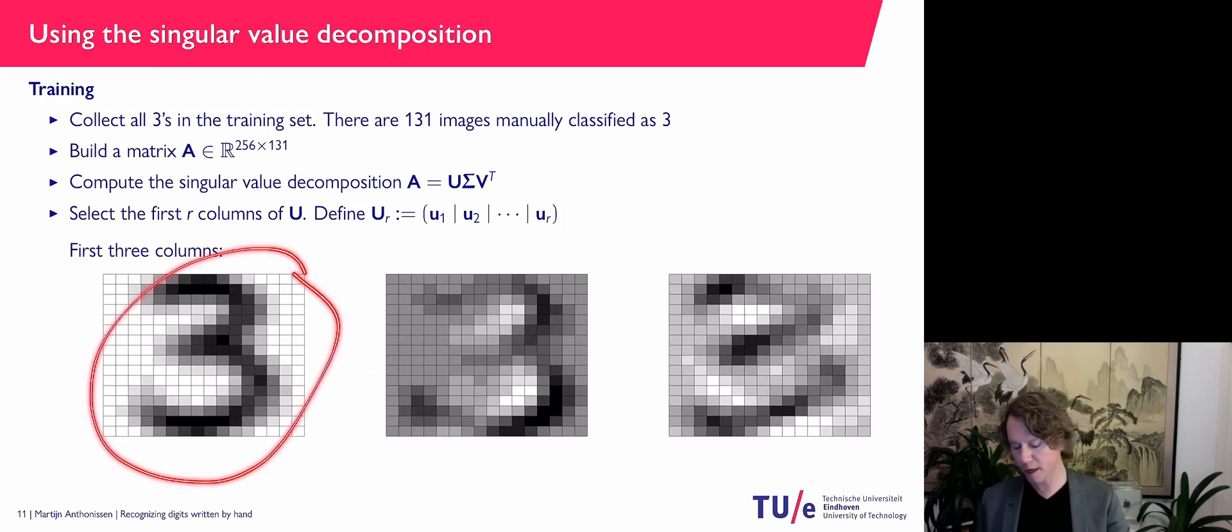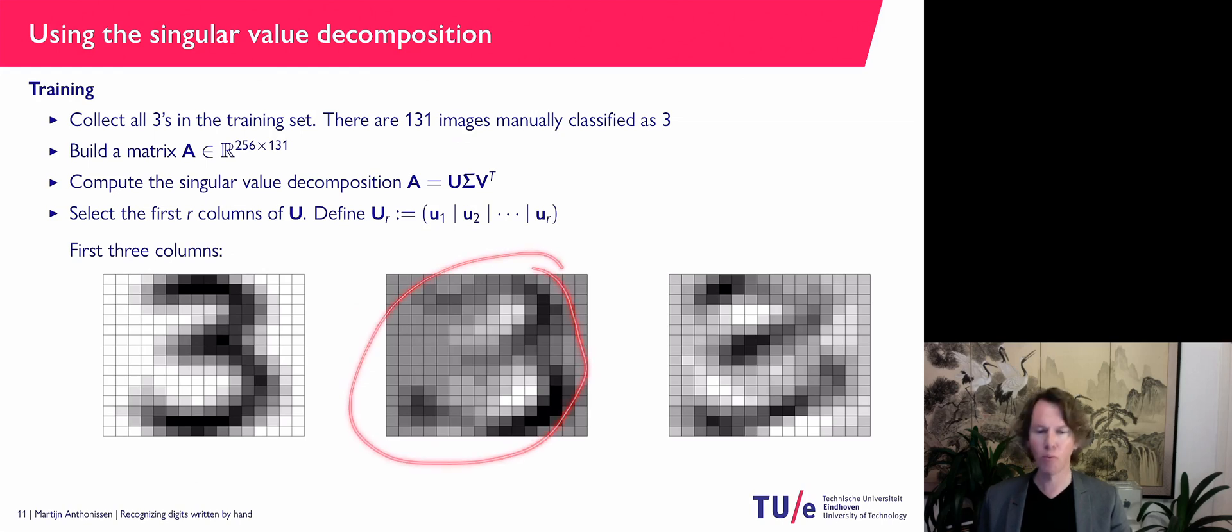So these columns, they characterize the images of a 3. So this one is about the average. That's very much like the average. And apparently these are the next important characteristics for a 3 in an image in the handwritten data set.